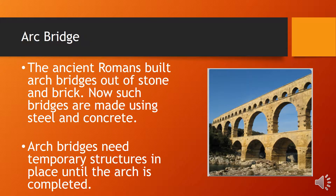The arch bridge. The ancient Romans built arch bridges out of stone and brick. Now such bridges are made using steel and concrete. Arch bridges need temporary structures in place until the arch is completed.